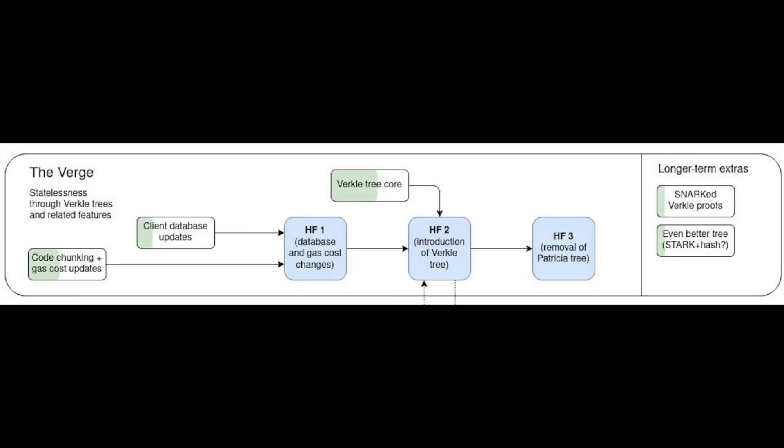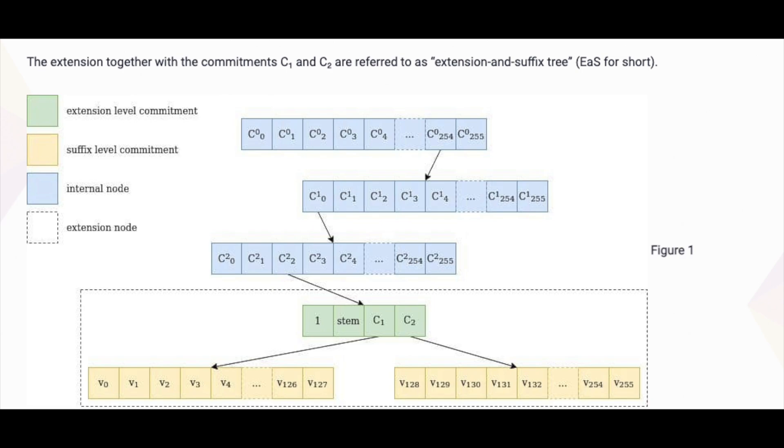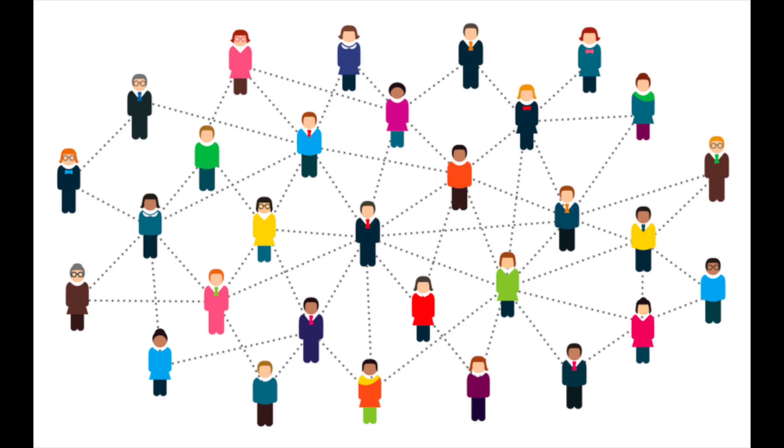We are now moving to Verkle trees, which use vector commitments. These allow you to commit to an ordered sequence of values, in such a way that it is later possible to open the commitment, only at a specific position. This is beneficial because it allows the network to only give you pieces of a block that have been read and written to, along with a Verkle proof, which is called a witness. Even without this special witness, the Verkle tree is shallower than Merkle trees. This special system allows users to verify the block immediately, without nearly as much memory required. This results in way more everyday users being able to create their own validators. The more people and systems around the world verifying the blockchain, the more democratic the system becomes.